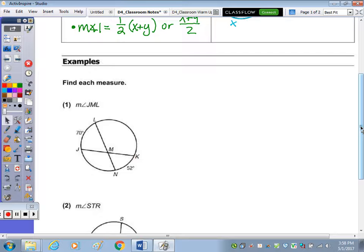So the angle is JML, so it's good to trace it. So J to M to L, and I'm going to label that angle X. Remember, that angle intercepts this arc.